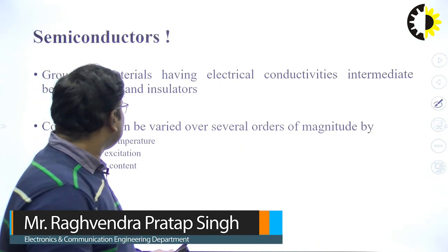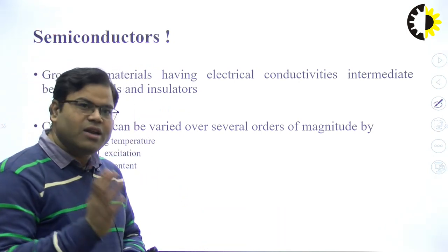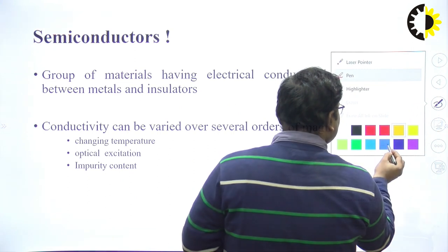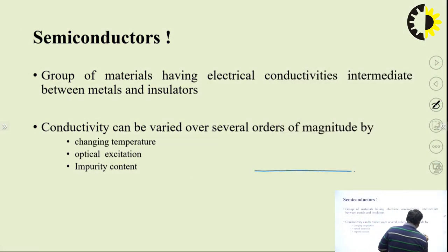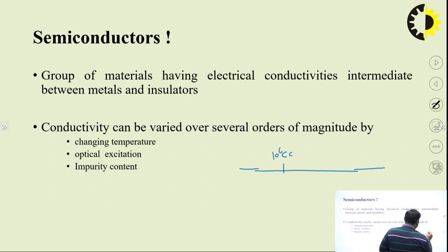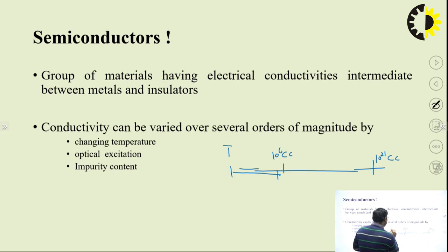If we talk about semiconductors, semiconductors are materials whose conductivities are intermediate between metals and insulators. Conductivity is decided by the concentration of charge carriers. If we take concentration of charge carriers on the x-axis, and put 10 to the power 6 carriers per centimeter cube, insulators have less than 10 to the power 6 free electrons per centimeter cube.